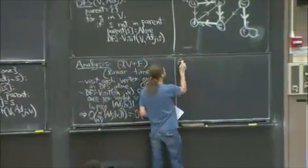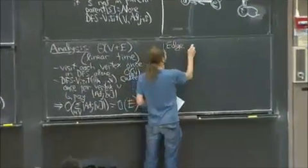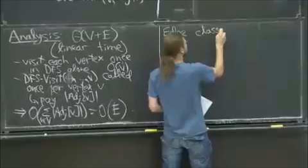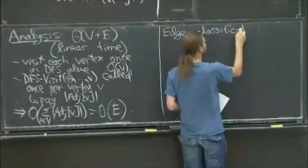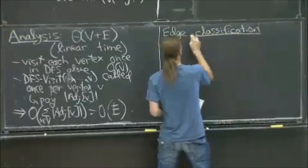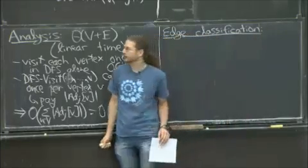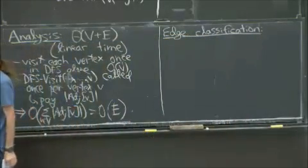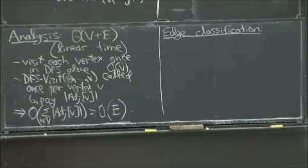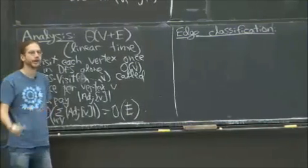So let me talk about edge classification. You can check every edge in this graph gets visited. In a directed graph, every edge gets visited once. In an undirected graph, every edge gets visited twice, once from each side.